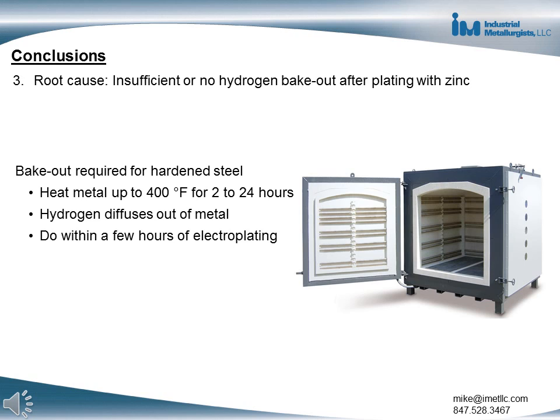The final conclusion is that the root cause of the failure was insufficient or no hydrogen bakeout after the zinc electroplating process. A bakeout is required after electroplating high-strength steel, and involves heating the metal to 400 degrees for 2 to 24 hours. During this time, the hydrogen is able to diffuse out of the metal. This step must be completed within a few hours after electroplating.